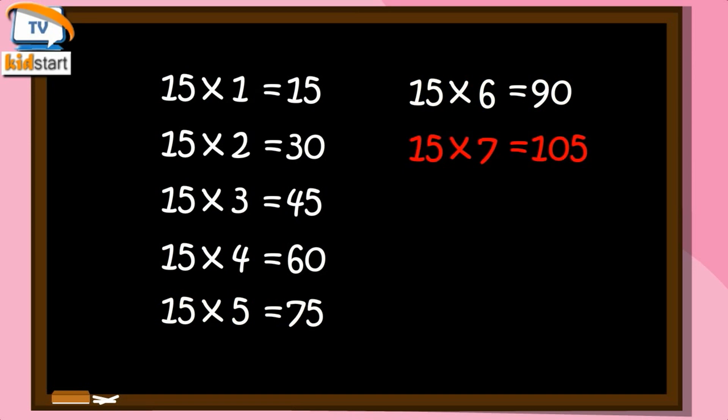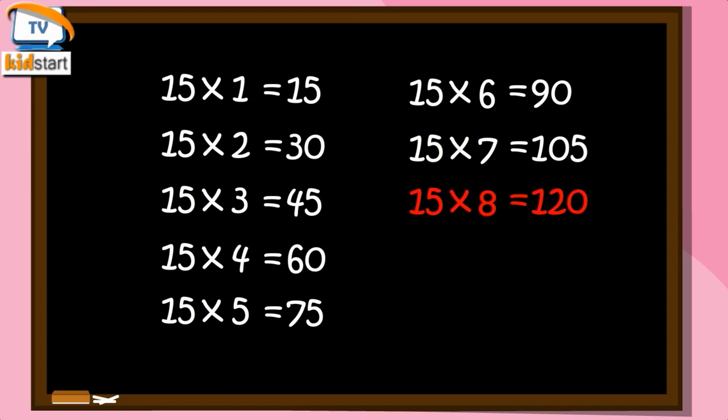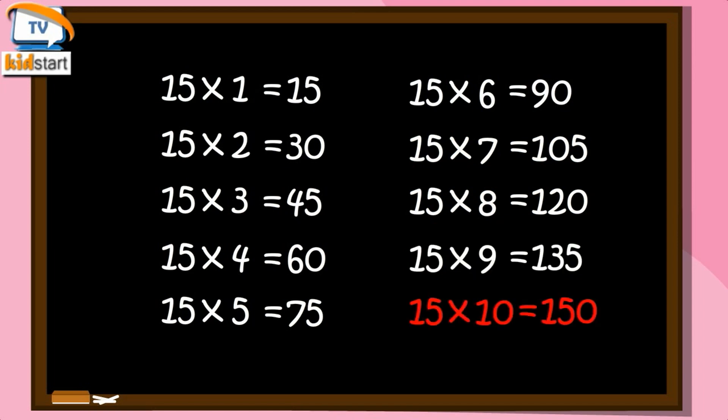Fifteen sevens are one hundred five. Fifteen eights are one hundred twenty. Fifteen nines are one hundred thirty-five. Fifteen tens are one hundred fifty.